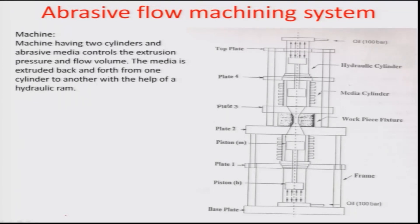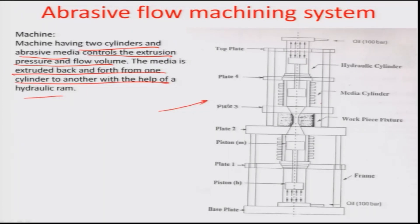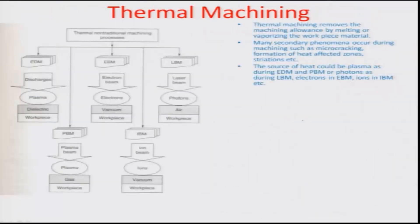A typical abrasive flow machining system has two cylinders, an abrasive media, and controls the extrusion pressure and flow volume. The media is extruded back and forth from one cylinder to another with the help of hydraulic rams, flowing through the internal contour region where finish machining occurs. There is a reduction in area which increases overall resistance. The walls get finished because of the to-and-fro motion of the medium driven by the two hydraulic rams on both sides.